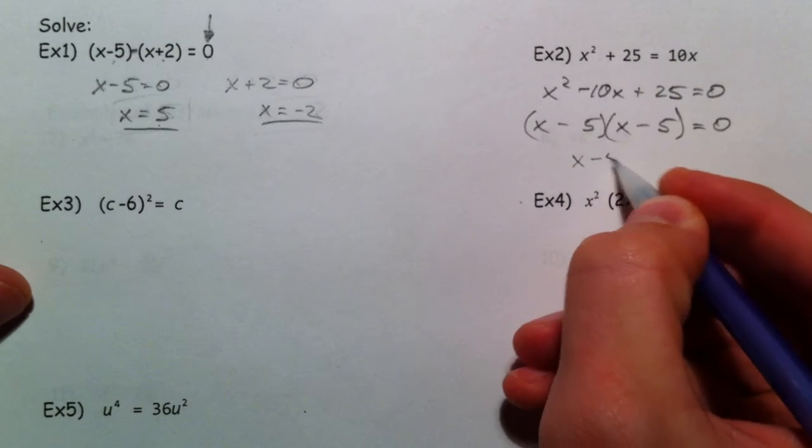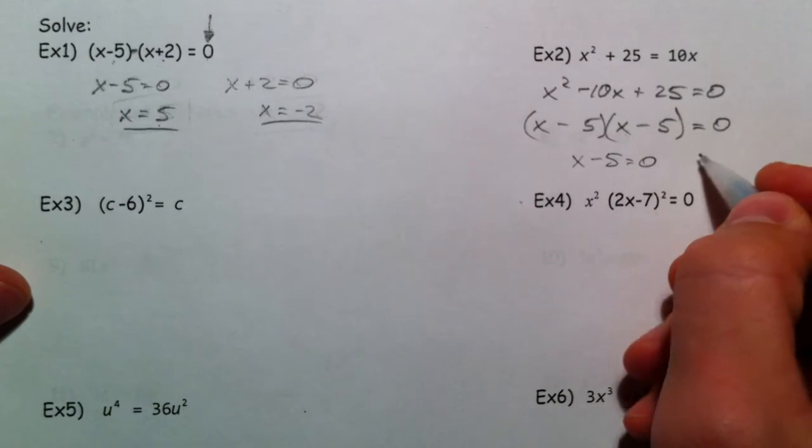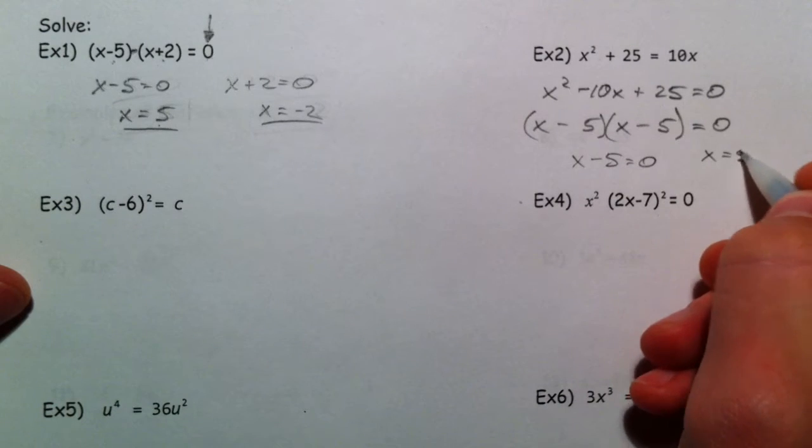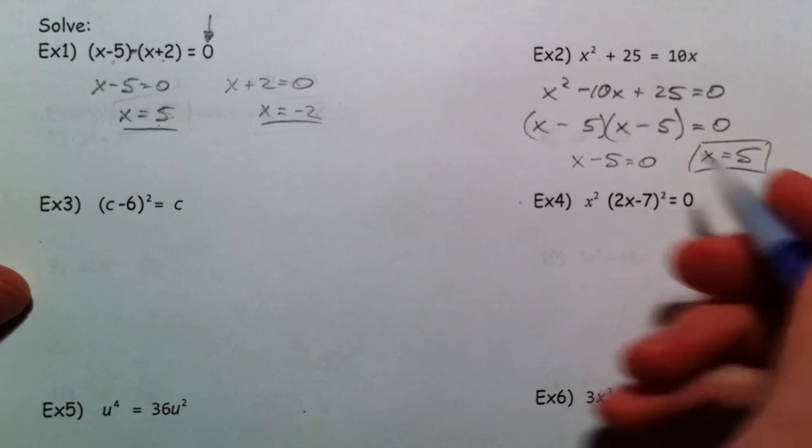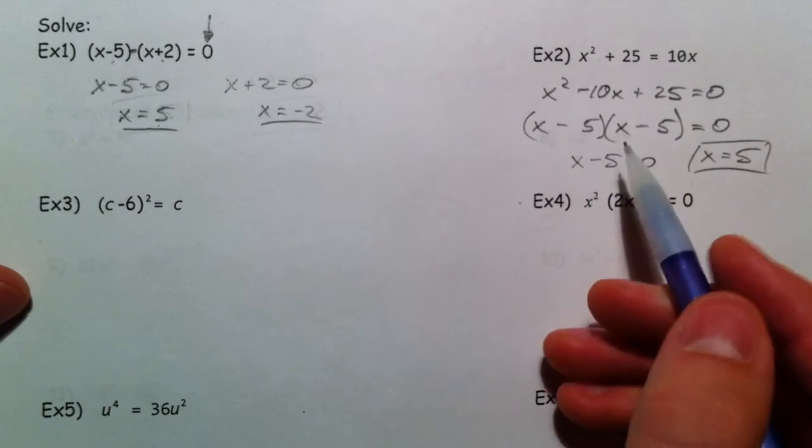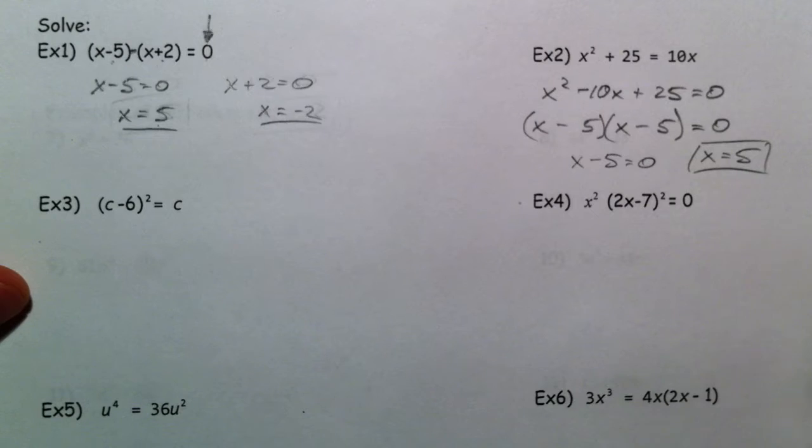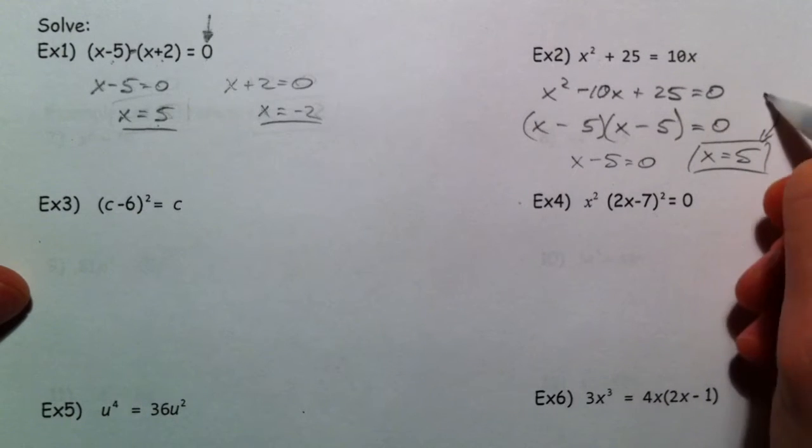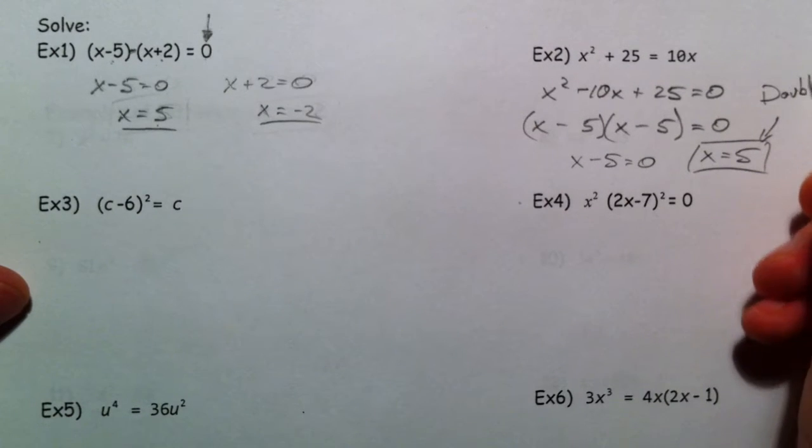So x minus 5 equals zero, and you can write it twice, but it's going to be kind of redundant. x equals 5. Now because it happens twice, we call this a solution, or we call it a root, and because it happens twice, it's a double root.